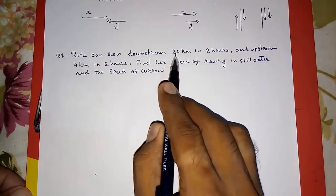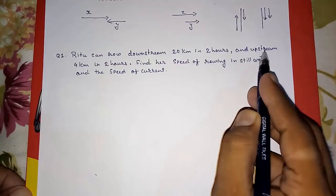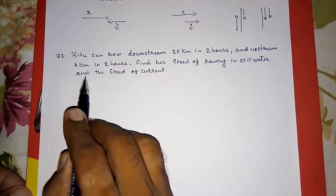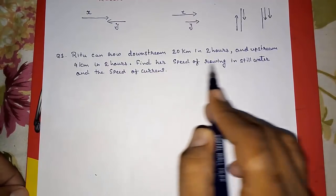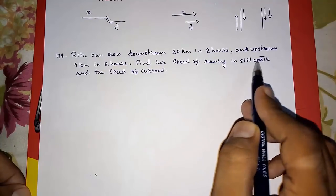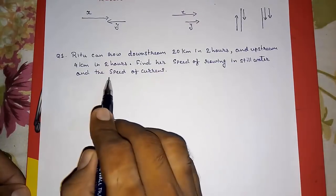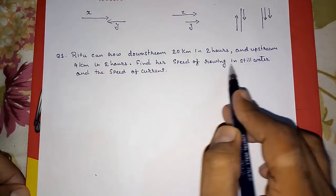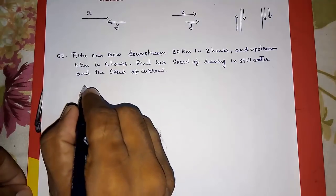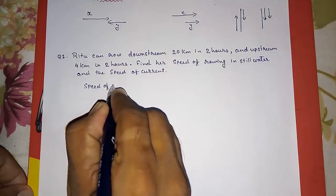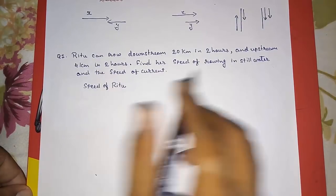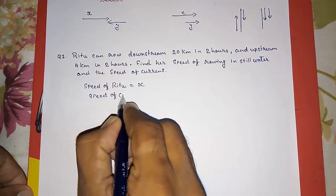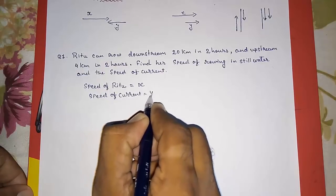Ritu can row downstream 20 km in 2 hours and upstream 4 km in 2 hours. Find the speed of rowing in still water and the speed of the current. We have to find two things: the speed of rowing in still water — that is our speed — and the speed of the current. So we suppose: speed of Ritu in still water equals X, and speed of current equals Y.